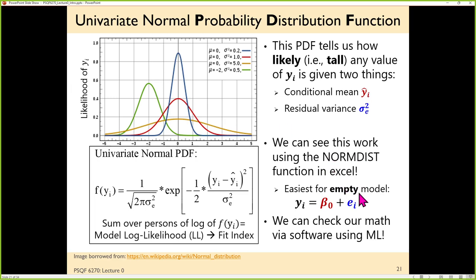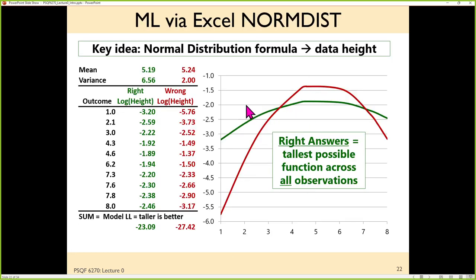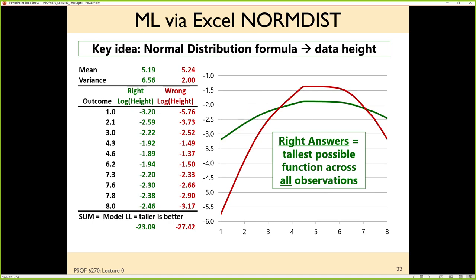If we want to do a quick demonstration, we can do maximum likelihood estimation using Excel. For an empty model — no predictors — beta zero is a fixed intercept. If there are no predictors, what's beta zero supposed to be? The mean — that's your best guess for someone's outcome if you know nothing else. E is how far off from the mean each observation is. So this equation is another way of representing the mean and variance of y.